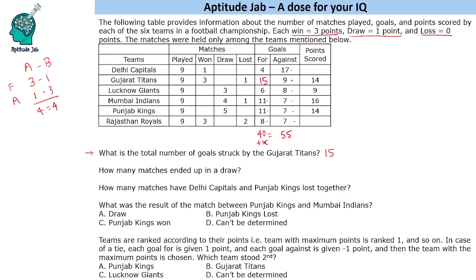The next question asks how many matches ended up in a draw. We also need to find: how many matches have Delhi Capitals and Punjab Kings lost together? To answer these, we need to find the wins, draws, and losses for each team.